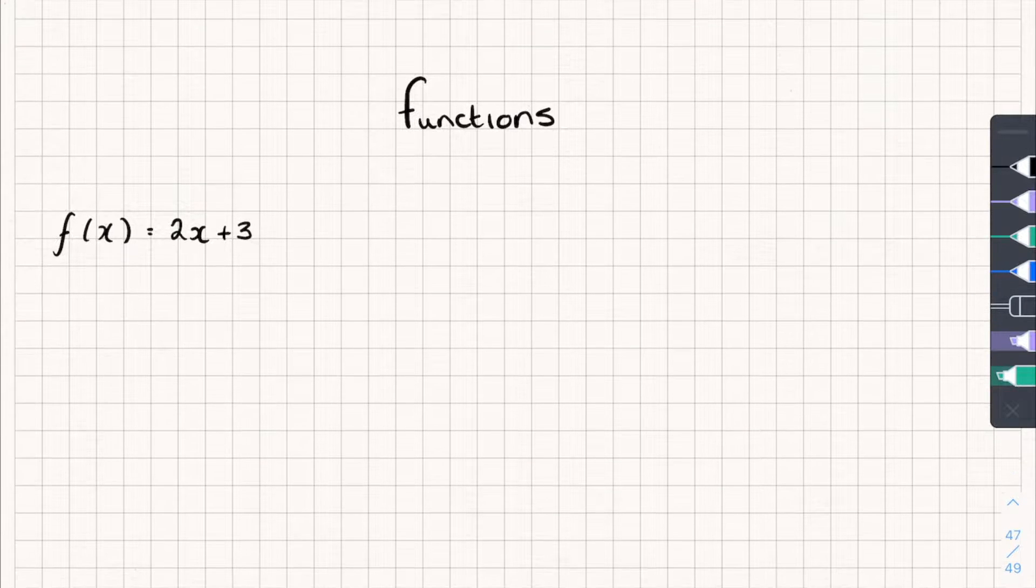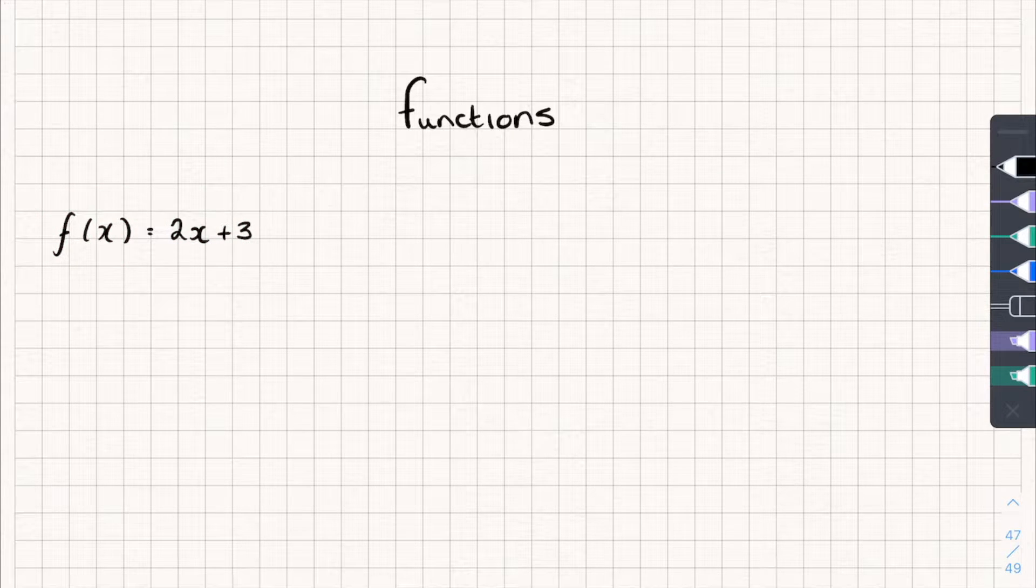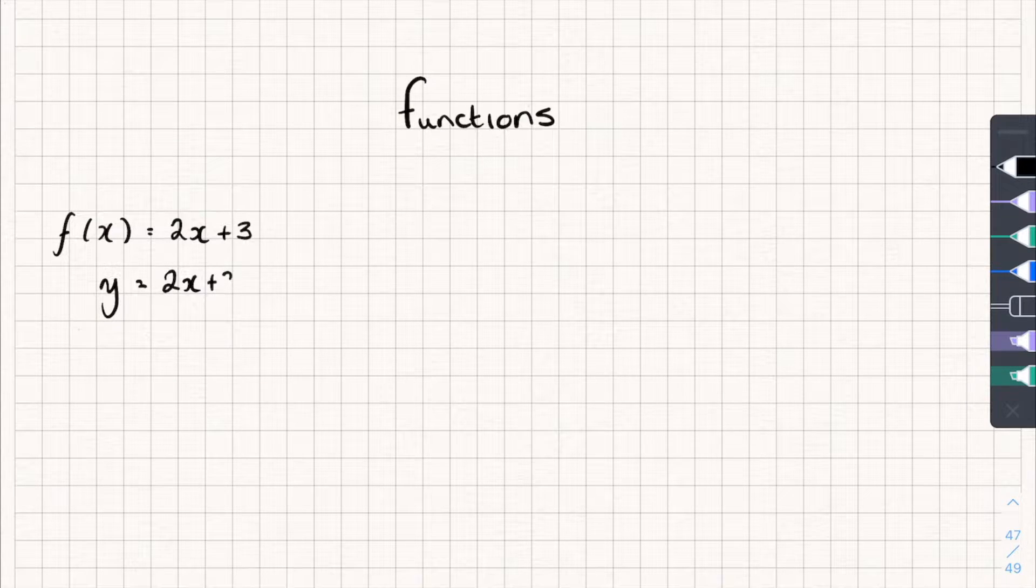So we write functions like this. Here's an example, f of x. And we read that as f of x, or a function of x, and that's usually equal to an expression like this. It might look confusing if you haven't seen functions before, but it's not much different from an equation like y equals 2x plus 3, except rather than y, we've got a function of x.